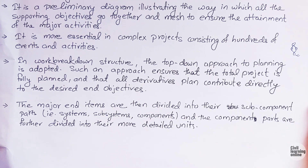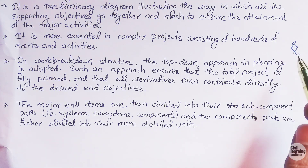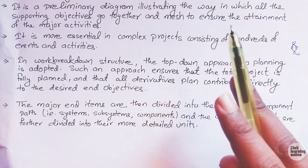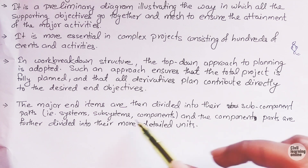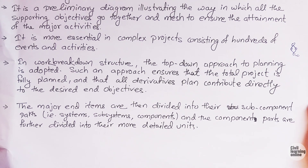The fifth point says that major items are divided into their sub-components. If we divide a major component into two smaller parts, those are sub-components. If we further divide them, those are sub-system components. The component parts are then divided into more detailed units. These are just divisions of a major component, and this was all about work breakdown structure.